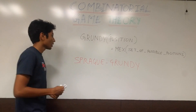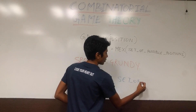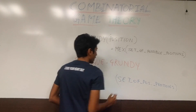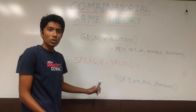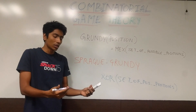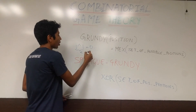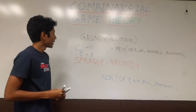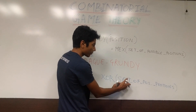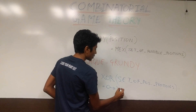The Sprague-Grundy theorem states that you have the set of possible positions you can go to, and you need to perform an operation on this which gives you results. The operation is XOR — binary XOR. XOR: 1 and 1 gives you 0; even number of 1s gives you 0; odd number of 1s gives you 1. If the XOR of all the Grundy numbers for all possible positions is equal to 0, that means you are losing.